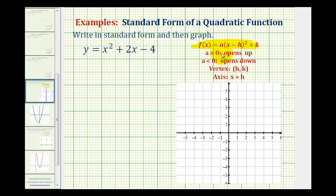Remember, if we have a quadratic function in standard form, if a is greater than zero, the parabola opens up. If a is less than zero, the parabola opens down. The vertex has coordinates h comma k, and the equation of the axis of symmetry is x equals h.